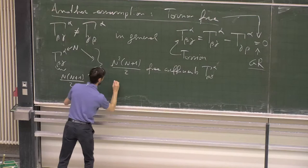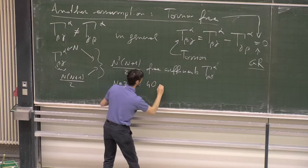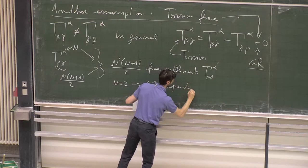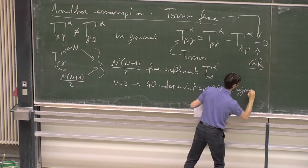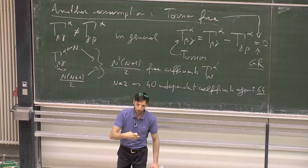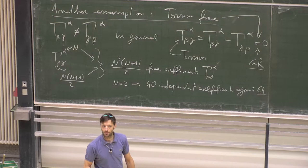For n equal to 4, we have 40 independent coefficients, compared to 64 if we had not assumed symmetry on the lower indices of the affine connection — because without that assumption we would have n³ possibilities. So that's quite a gain.